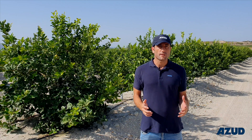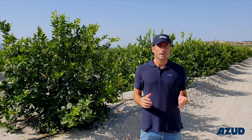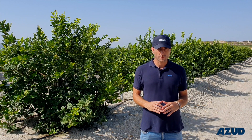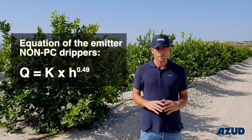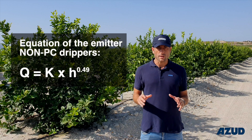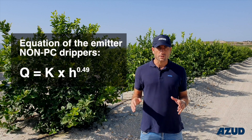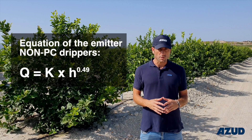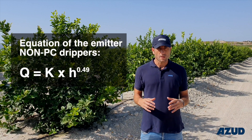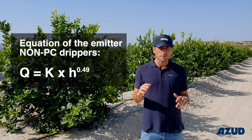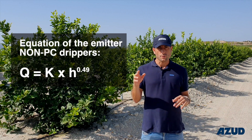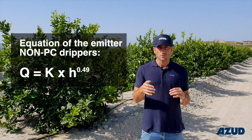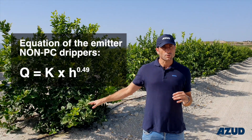The second parameter that affects our maximum length is determined by the equation of the emitter. It is going to give us the flow rate in every emitter in our non-PC drip lines. The water enters the emitter through the labyrinth and drops out toward the roots.